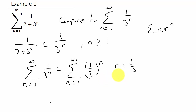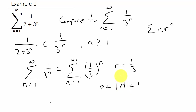For the geometric series, the absolute value of r — which in this case is 1/3 — is between 0 and 1. Since 1/3 is between 0 and 1, that means this series converges.